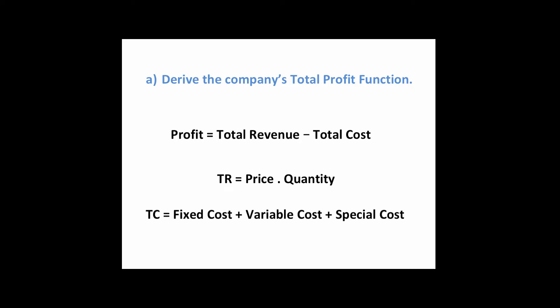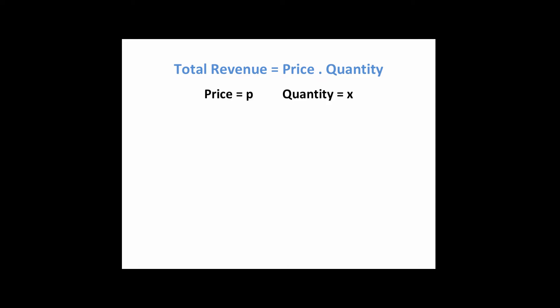In the question, we were given a number of costs, and this is your formula for your total cost function: fixed, variable, and special costs. Another relationship you need to know is your total revenue, which is price by quantity — price multiplied by quantity. We were told in the question that price is represented by P, given in your demand function, and quantity is equal to X. We typically would call it Q, but because we're dealing with quadratic equations, we refer to quantity as X.